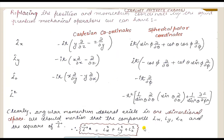The orbital angular momentum representation — how do we express it in Cartesian coordinates and spherical polar coordinates? By replacing the position and momentum coordinates with the equivalent quantum mechanical operators, we can derive the expressions. Let's move on.